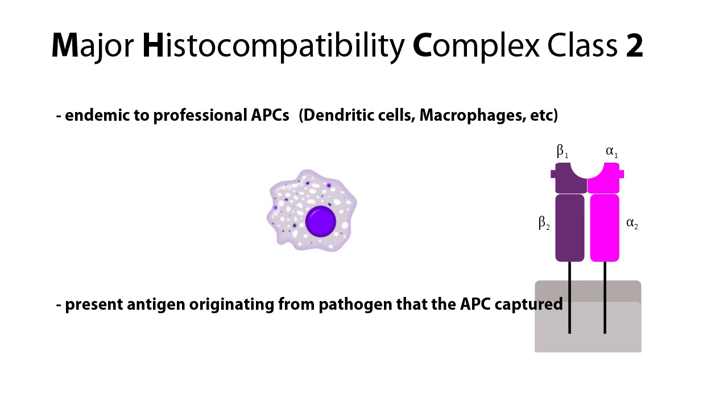such as dendritic cells, macrophages, and in some rare cases B cells, as well as specialized epithelial cells, have these MHC II molecules.